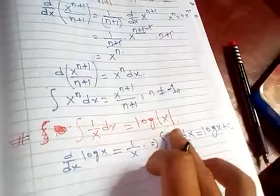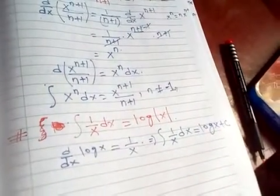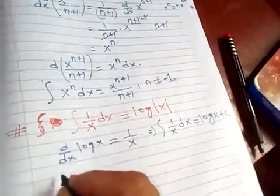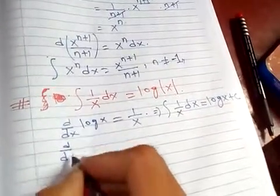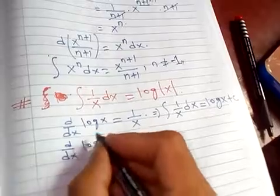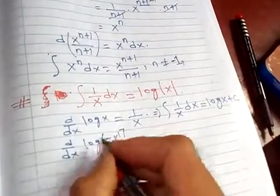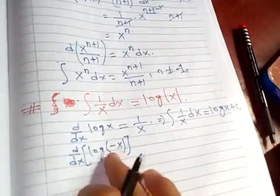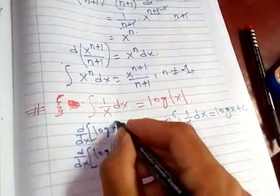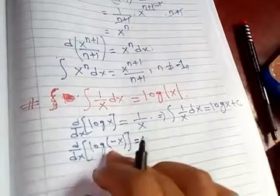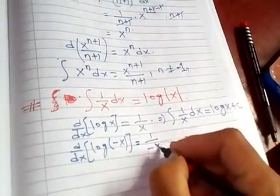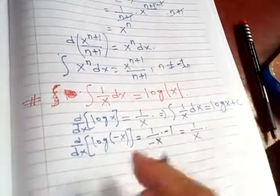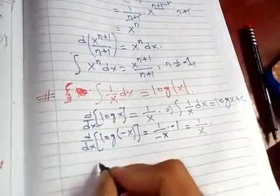This modulus is possible for negative values also. Let's differentiate log of negative x, where x is a negative number. If x is not negative, then log of negative is not defined. When you differentiate this, you get one over negative x times negative one. When you differentiate, you get one over x only.